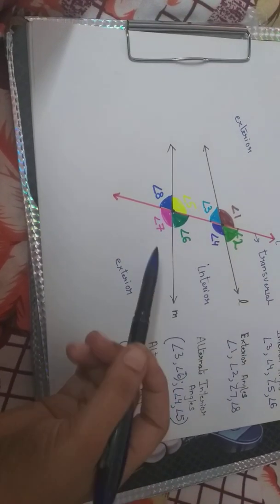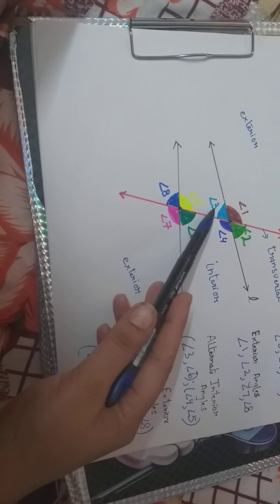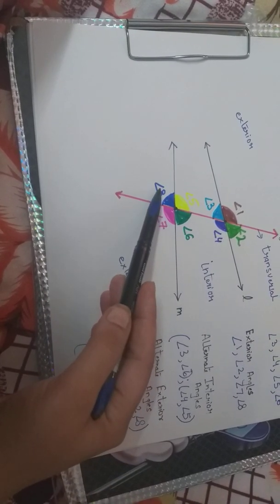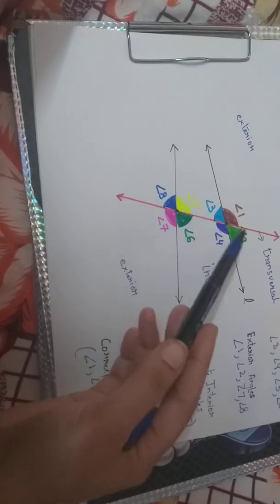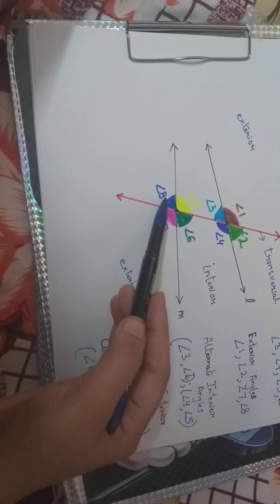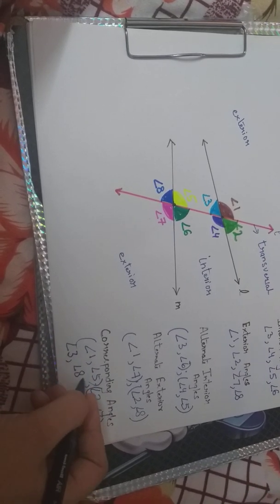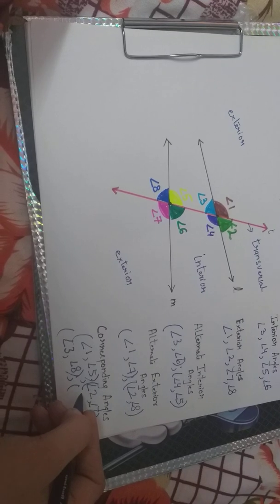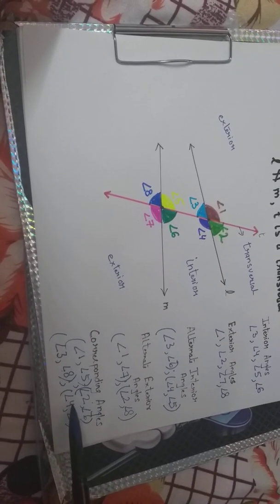Now angle 3 — can you guess which angle shares the same position? It's angle 8. Angle 3 is below line L towards the left side, and angle 8 is below line M towards the left side. So the third pair is angle 3 and angle 8. The last pair left is angle 4 and angle 7. So there are 4 pairs of corresponding angles in total.